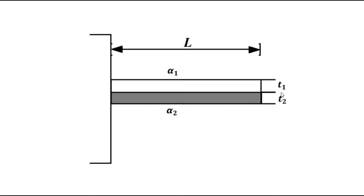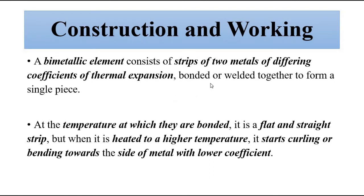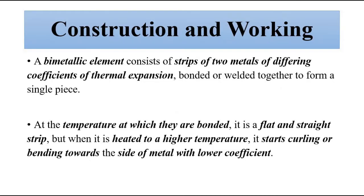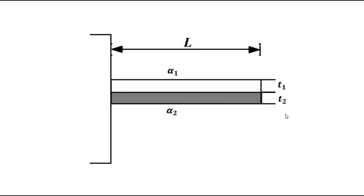That property is utilized here. Two different metals of different thickness t1 and t2, with two different coefficients of linear expansion alpha 1 and alpha 2, are combined and bonded or welded together to form a single piece. This is the initial position and this is the original length of the bi-metallic element.